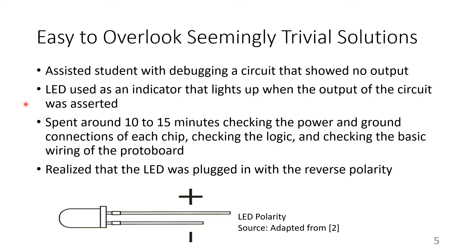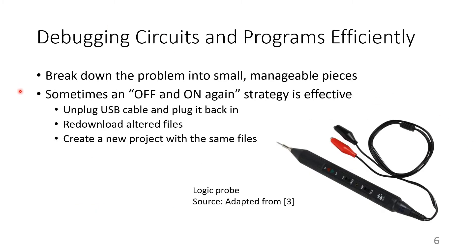I suddenly realized that the student might not understand that LEDs have a polarity, and that the positive leg, the anode, is the longer leg, and the negative leg, the cathode, is the shorter leg. We did realize that the LED was plugged in with reverse polarity, and when the student turned the LED in the opposite direction, their circuit worked perfectly. This story really illustrates how it is easy to overlook seemingly trivial solutions when solving problems. A key strategy for debugging is to break down the problem into small manageable pieces and test each piece in a logical sequence in order to isolate where the problems might be coming from.